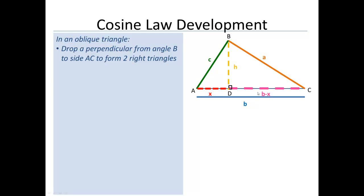And on the right, since the entire length is B and this little piece is X, this side here will be B minus X.